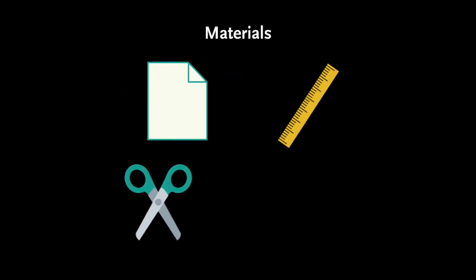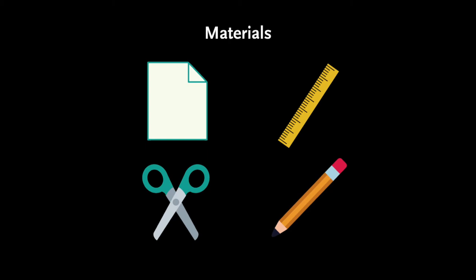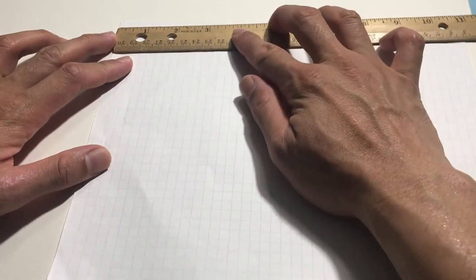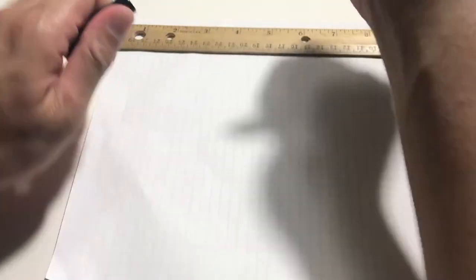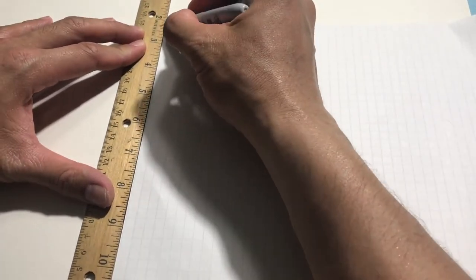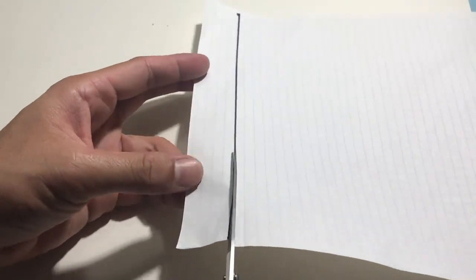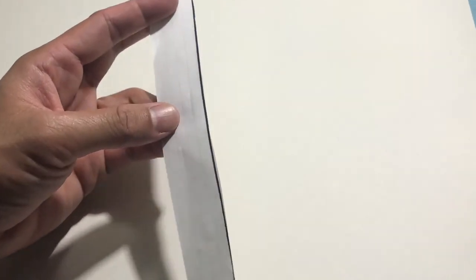Let's test Bernoulli's principle by doing an activity with me. You are going to need to gather the following materials: paper, a ruler, scissors, and a pencil. First, put the paper the short way. Then on the top corner, mark an inch away from the corner. Draw a straight line starting from that mark, and then carefully use your scissors to cut that line. And there you have it — your strip of paper. Now you're going to put the strip of paper under your lower lip and blow a steady flow of air on top of the paper.